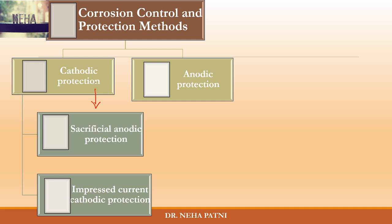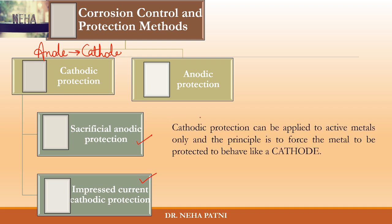Cathodic protection means you are protecting your anode from getting corroded by changing it to cathode — you are converting your anode to cathode. Cathodic protection can be applied to active metals only, because they are anode, they are active, and they are getting corroded. The principle is to force them to behave like a cathode.